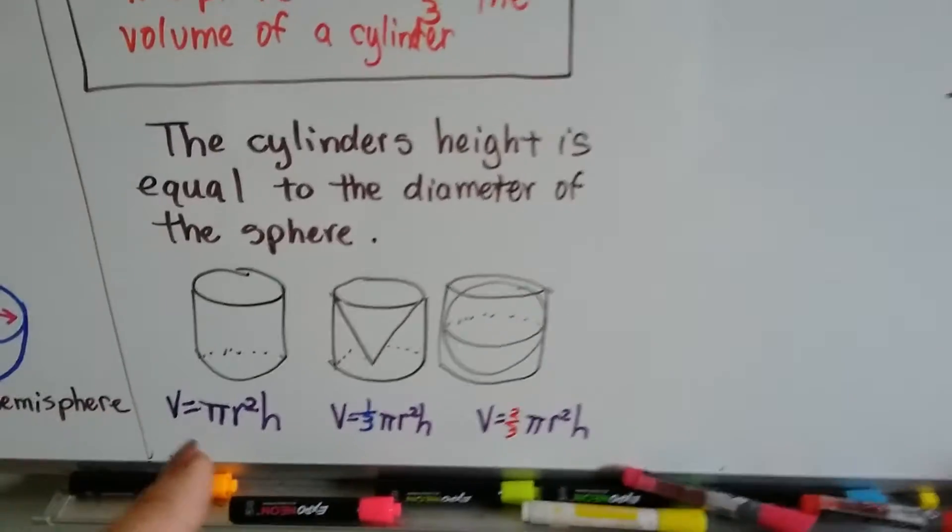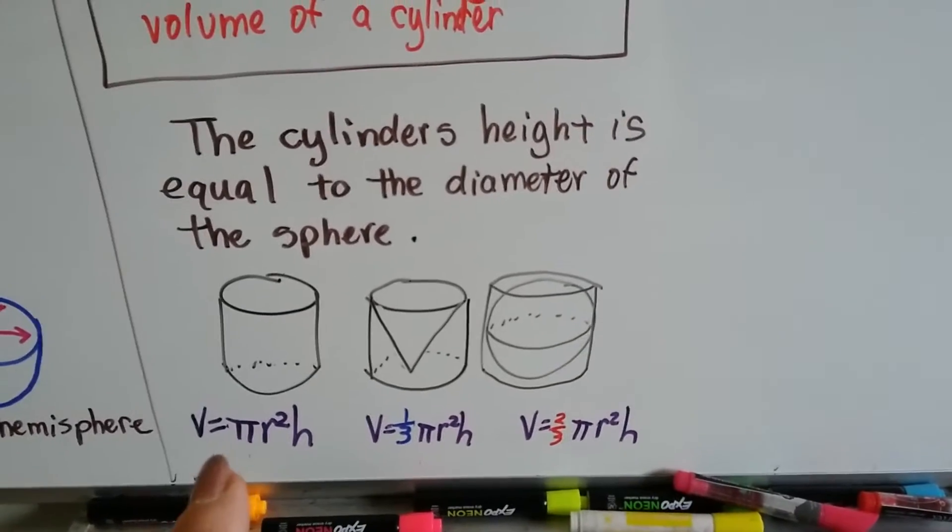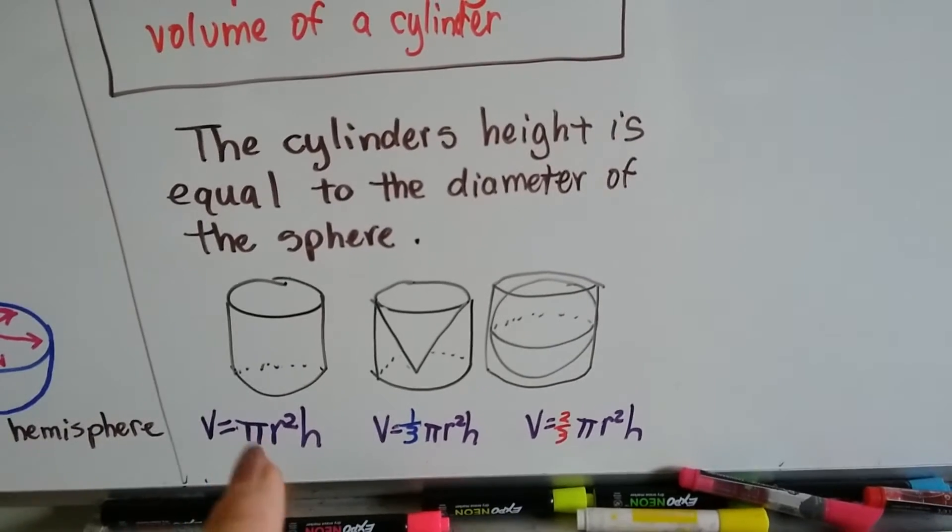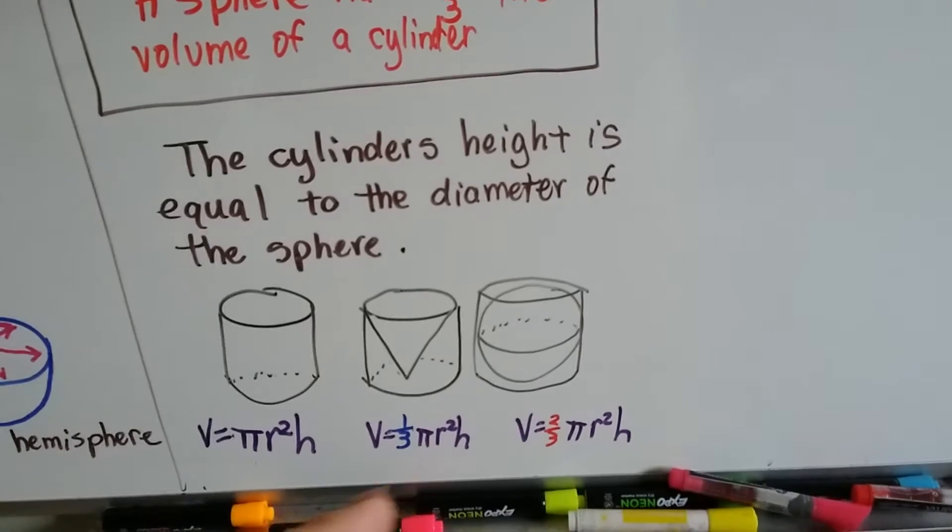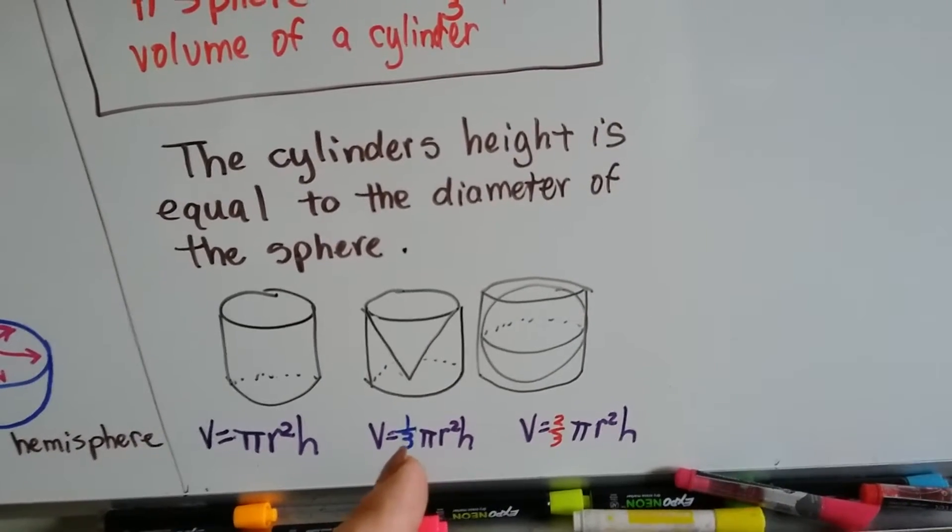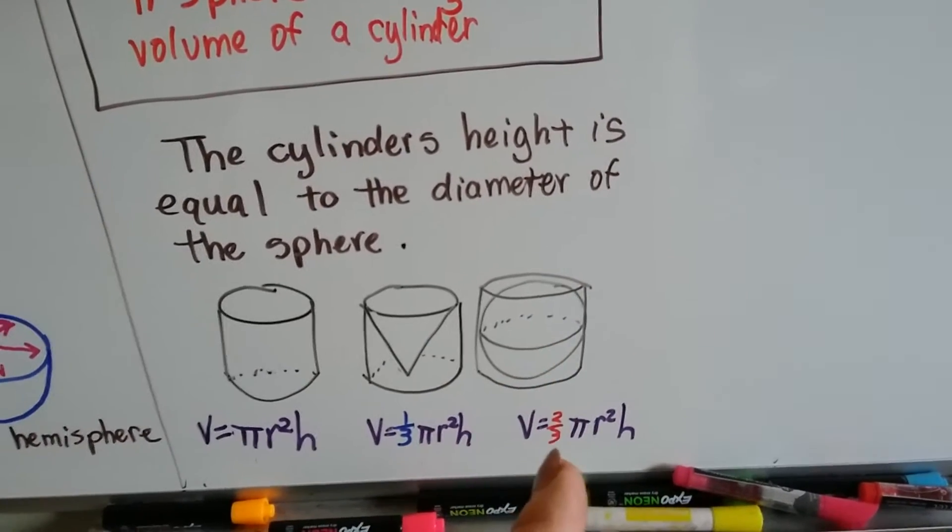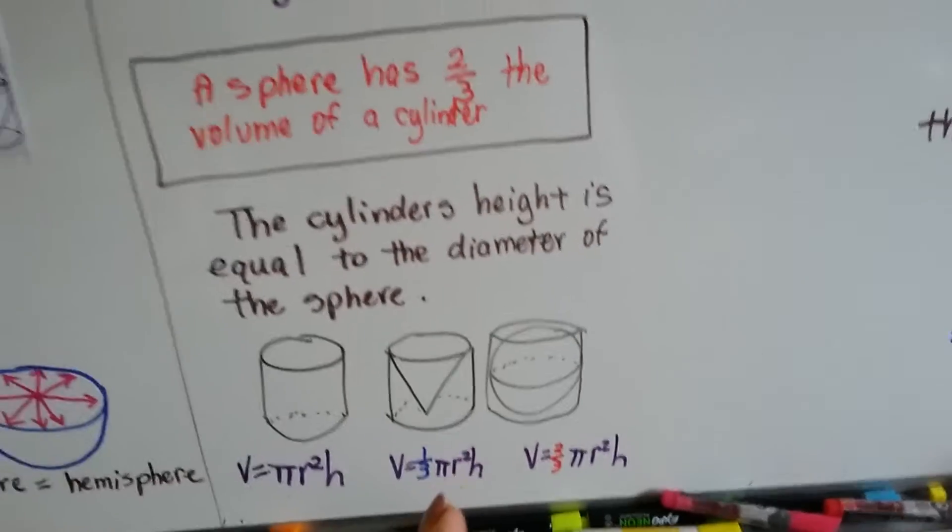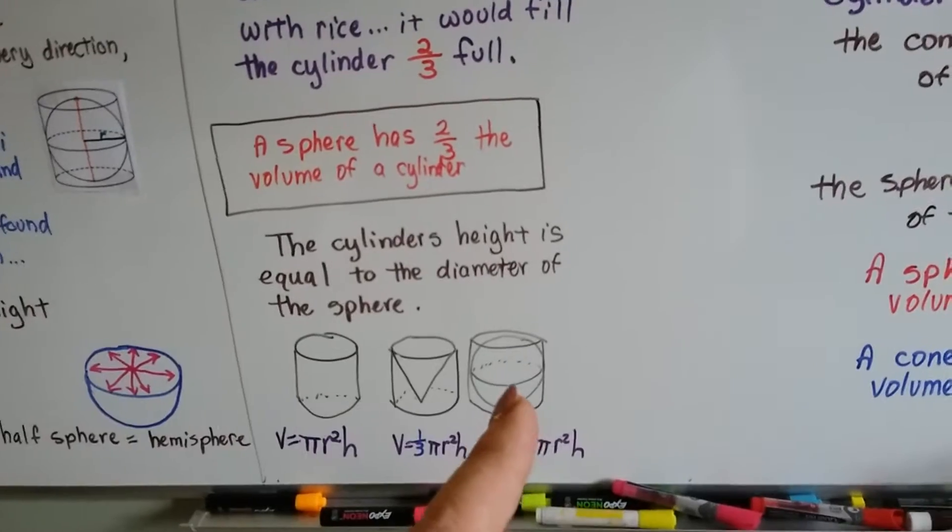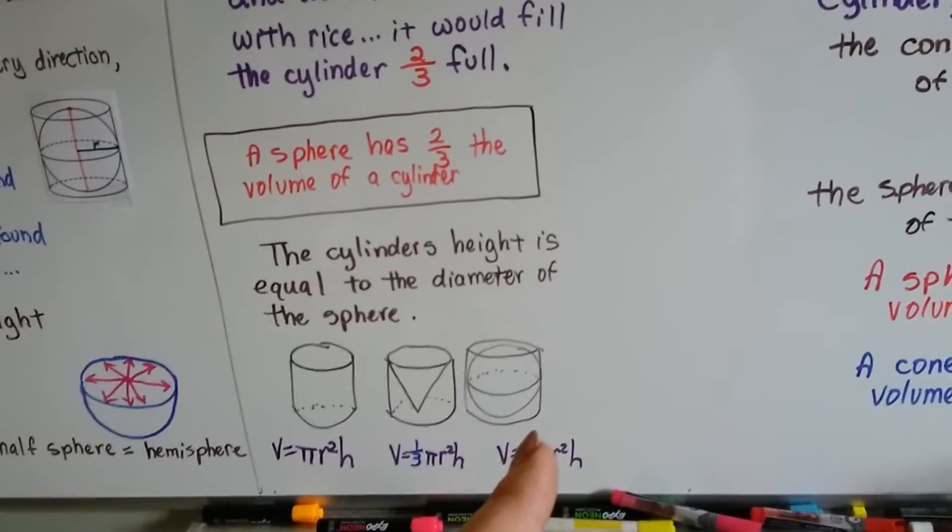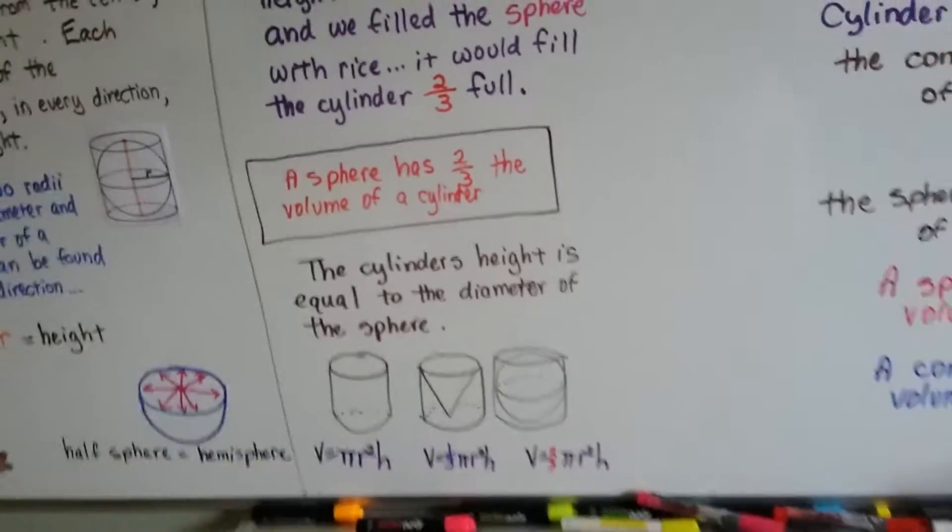We saw in the last video that the volume for a cylinder is pi r-squared h, and that r-squared is the base and the h is the height. Well, for the cone, we stuck a one-third in front of the pi. For a sphere, we stick a two-thirds in front of it, because the cone is one-third the volume of the cylinder, and the sphere is two-thirds the volume of the cylinder. That's why they're there.